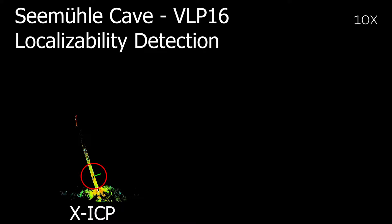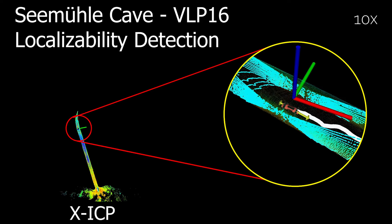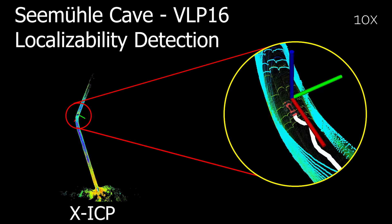The detected degeneracy by the localizability module, shown as the yellow arrow, can be seen clearly indicating the direction of the tunnel. Furthermore, once the robot observes the turn of the tunnel, the fine-grained localizability analysis informs the optimization to use the LiDAR data.